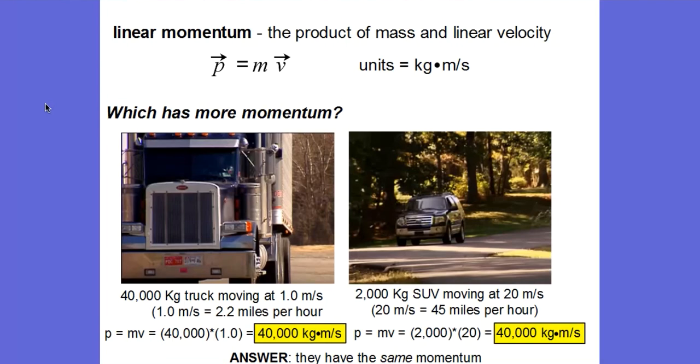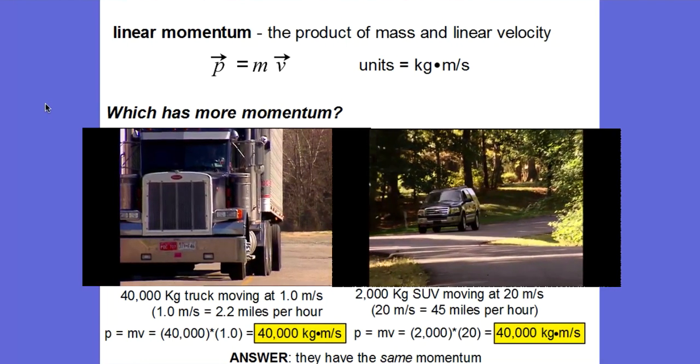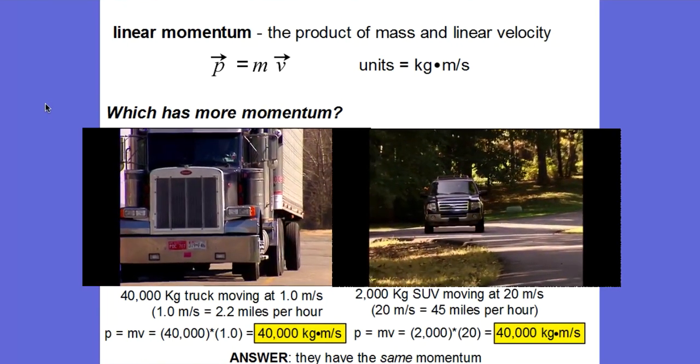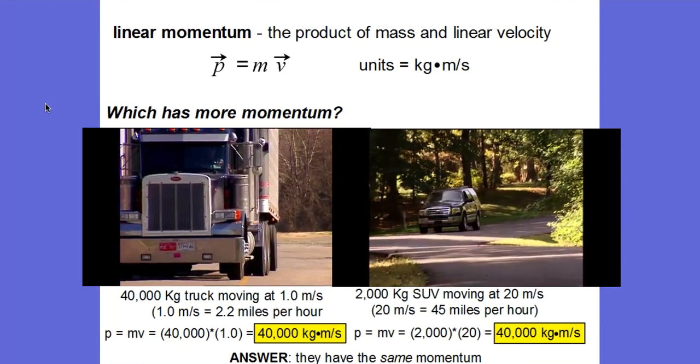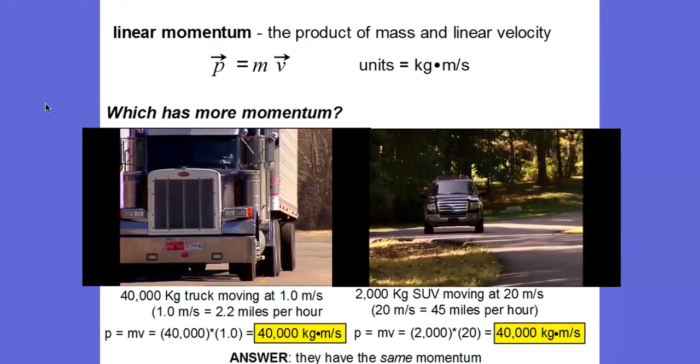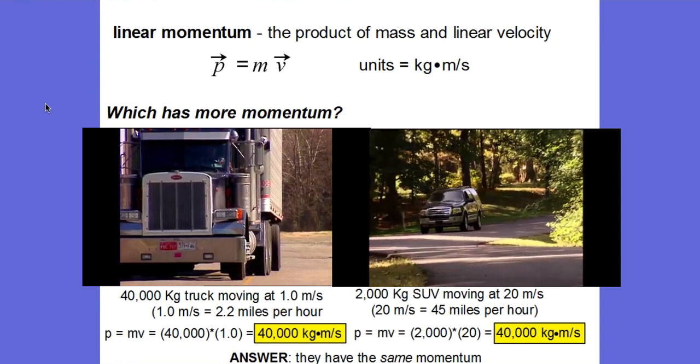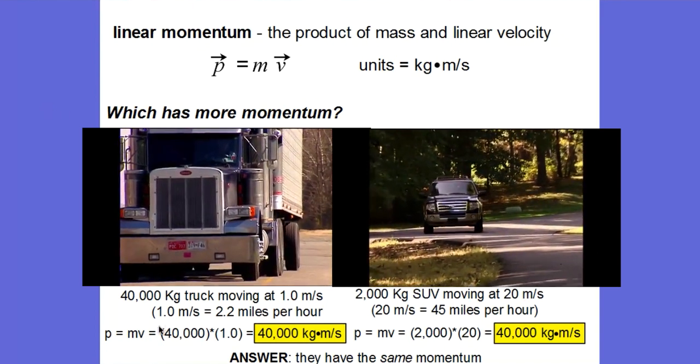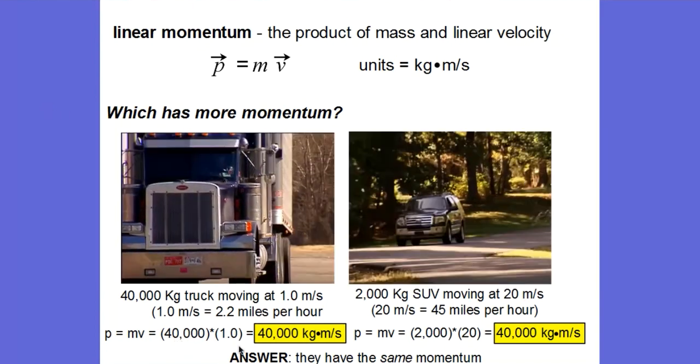Which has more momentum, a 40,000-kilogram truck moving at 2.2 miles per hour, or a 2,000-kilogram SUV moving at 45 miles per hour? The answer is they have the same momentum. Their mass times their velocity in meters per second shows me that they both have 40,000-kilogram meters per second worth of momentum.